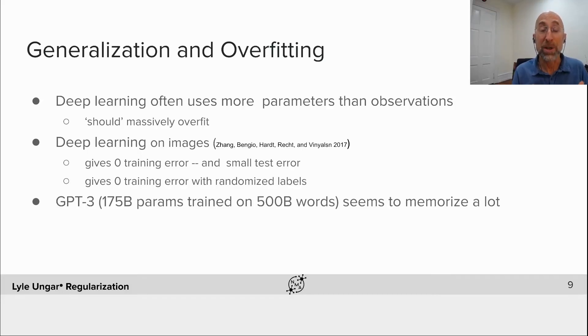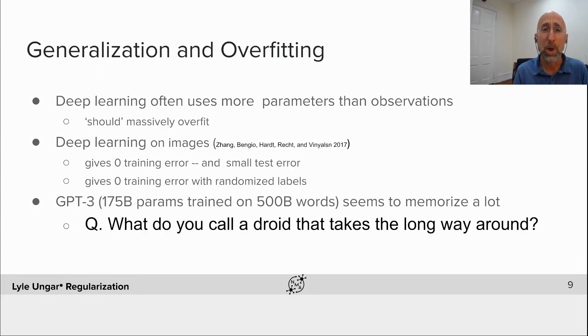If you look at modern natural language processing models like GPT-3, my current favorite one, there's 175 billion weights trained on 500 billion words of text. That's almost enough to memorize all of the words it seems. It can actually have stored up the pattern, the sequence of words that's there. And if we look at does it do that? If you ask GPT a prompt and input, what do you call a droid that takes the long way around? It will then predict what words might follow. R2 detour.